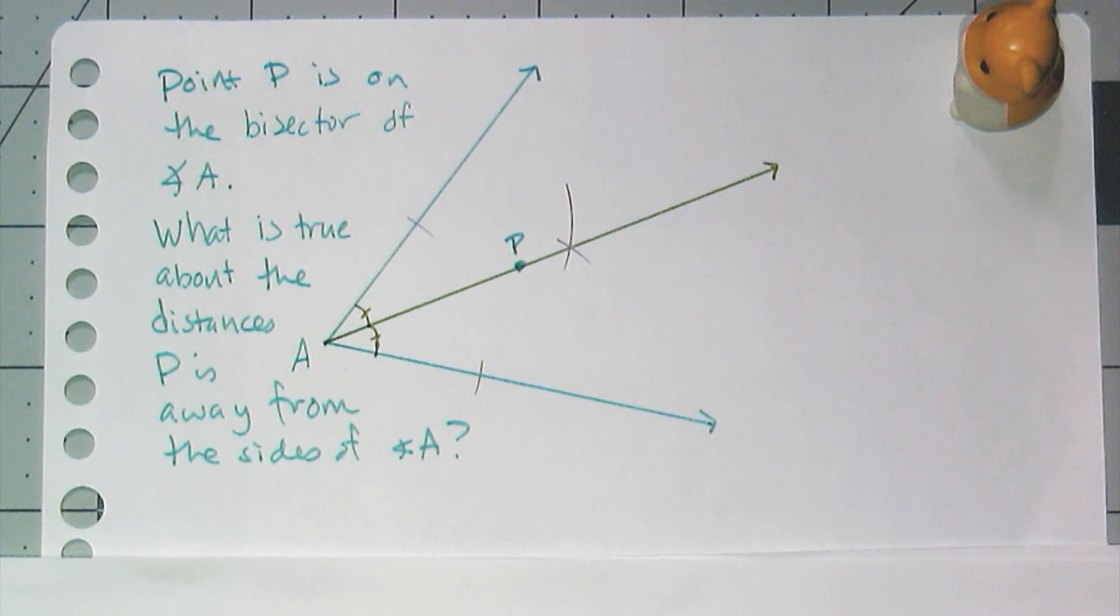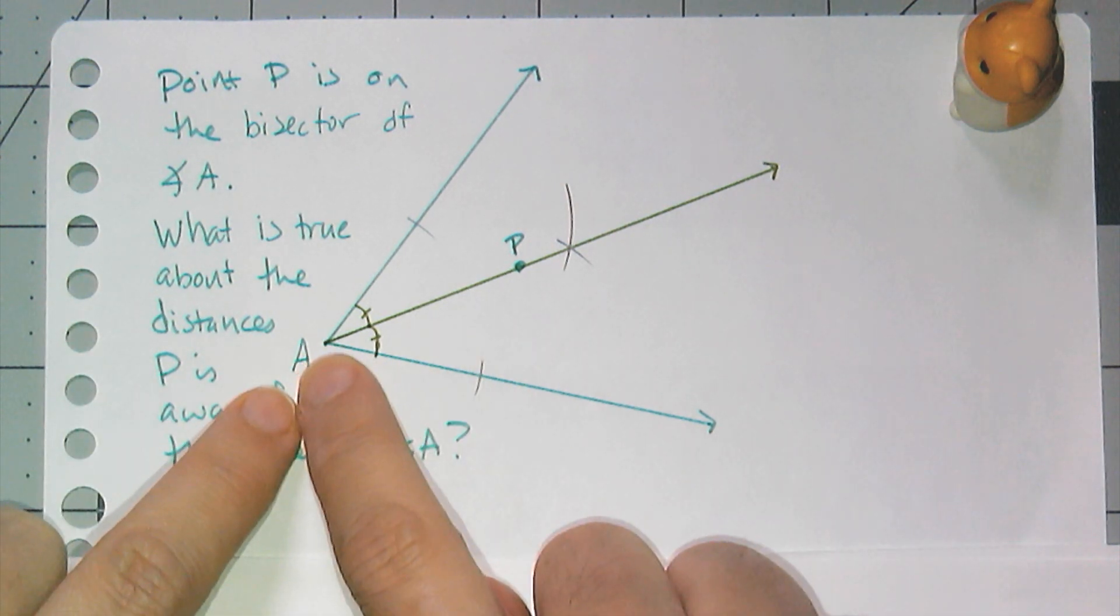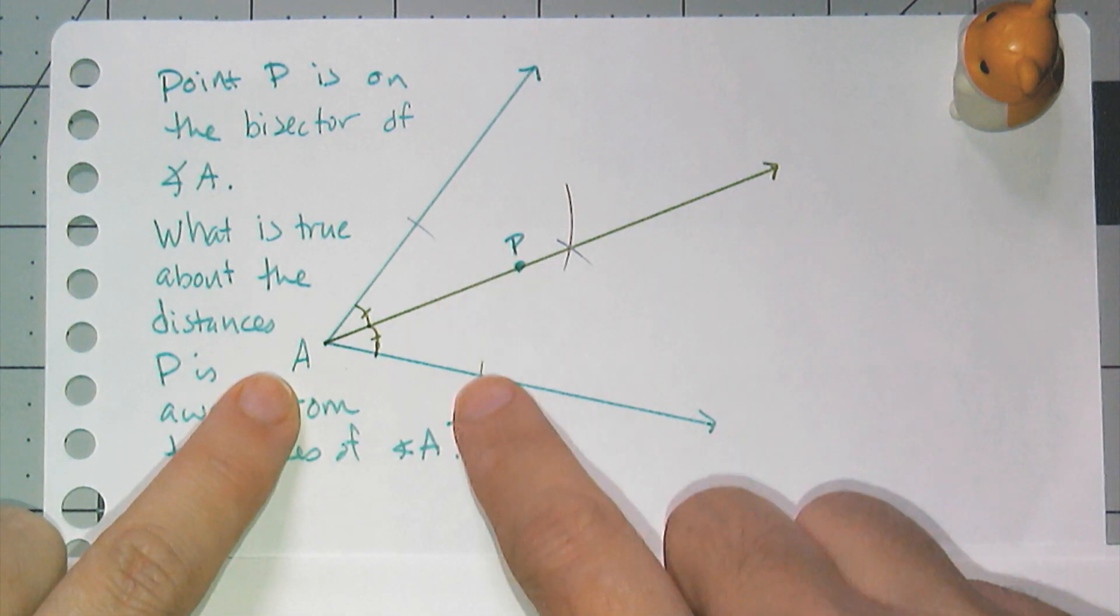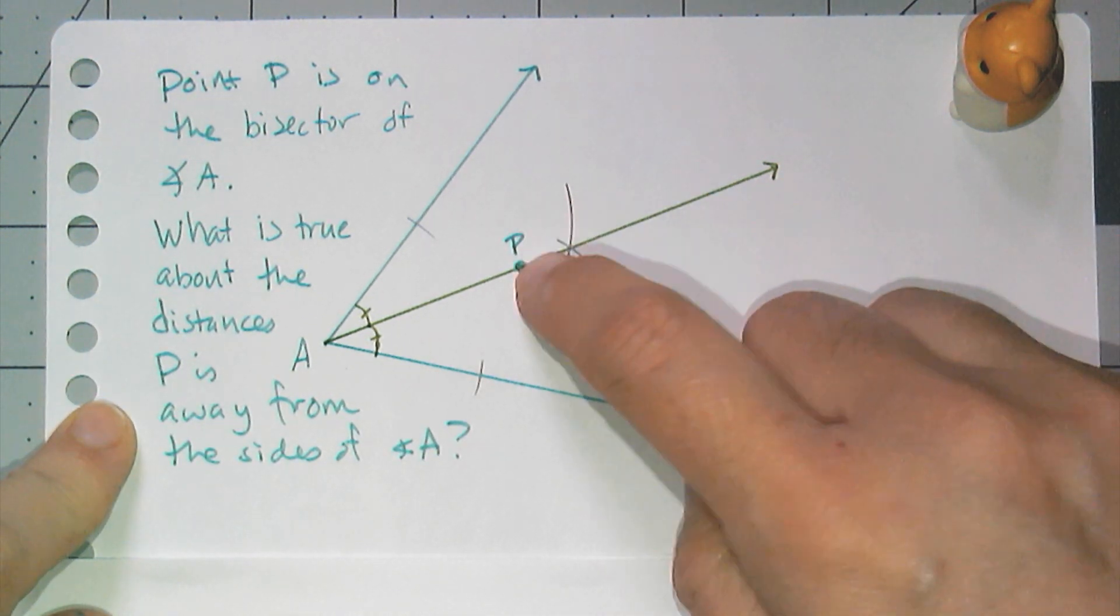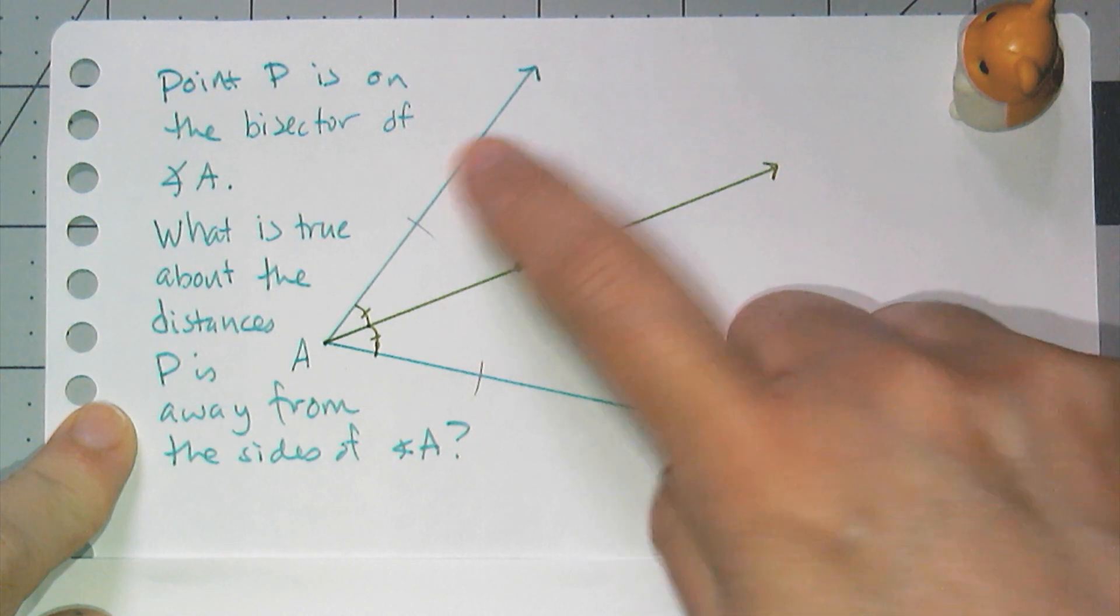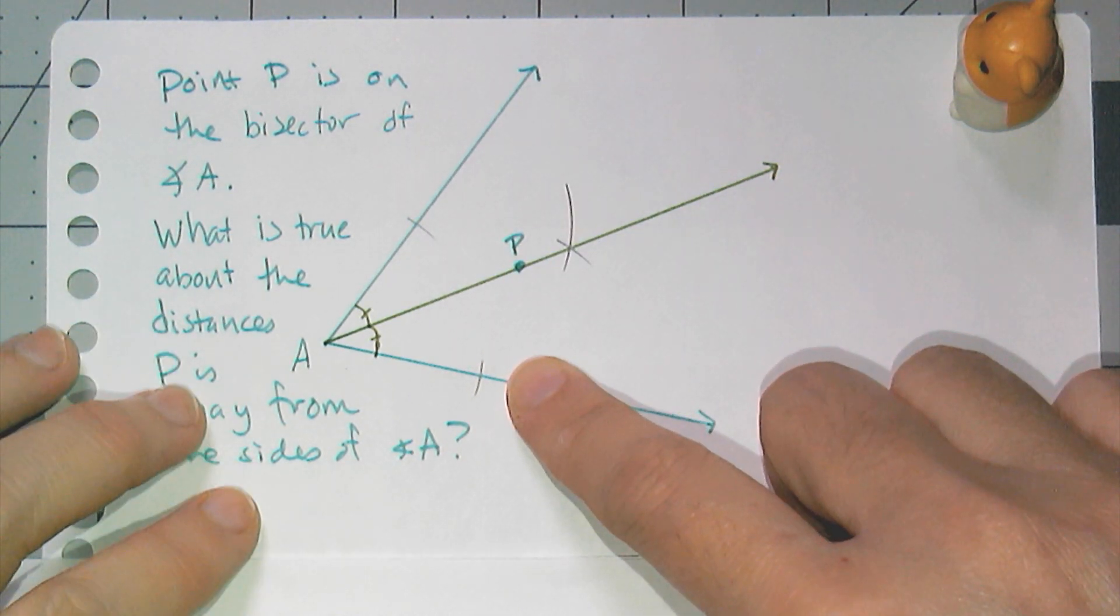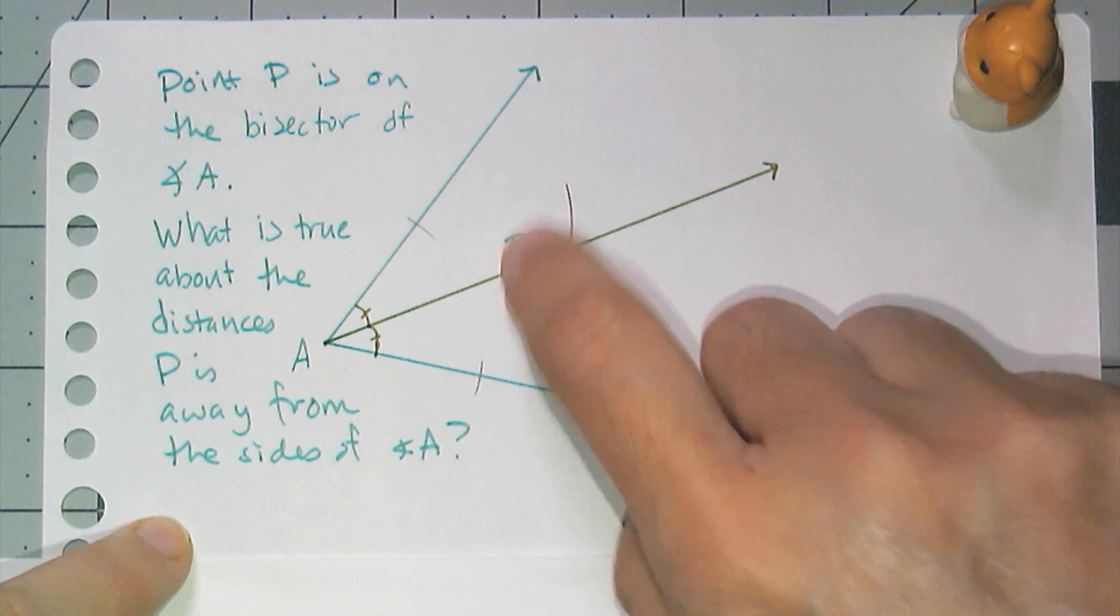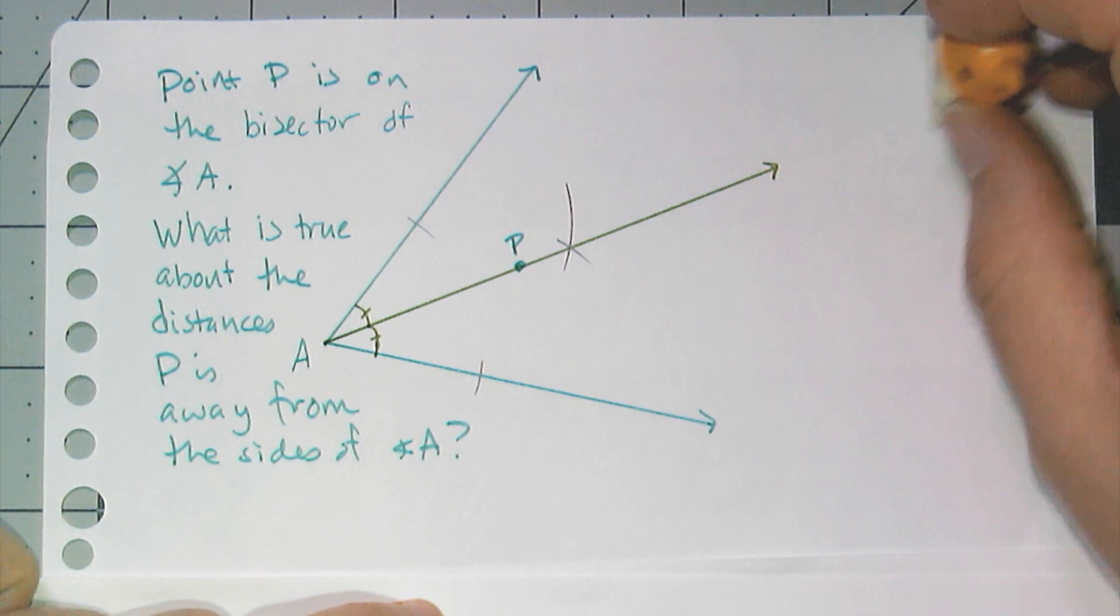So of course after I do these constructions, I want to see what is going on. I have a point P on the bisector of angle A. I see the construction works, and I want to know what is true about the distances from P to the sides of A. If you remember from shortest distance, when I say the distances from a point to a line segment or a ray, I'm looking for the perpendicular distances.